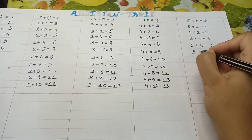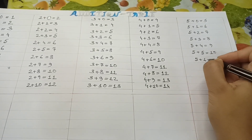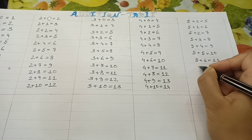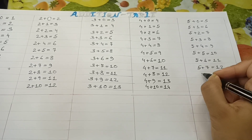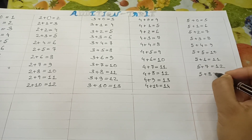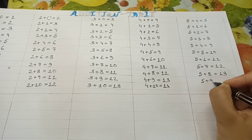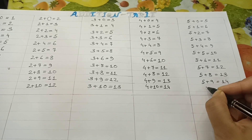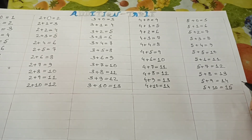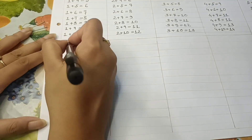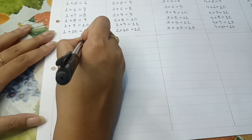5 plus 5 is equal to 10. 5 plus 6 is equal to 11. 5 plus 7 is equal to 12. 5 plus 8 is equal to 13. 5 plus 9 is equal to 14. 5 plus 10 is equal to 15.